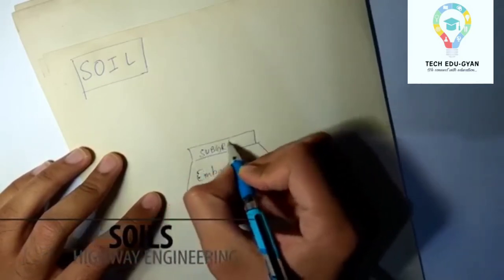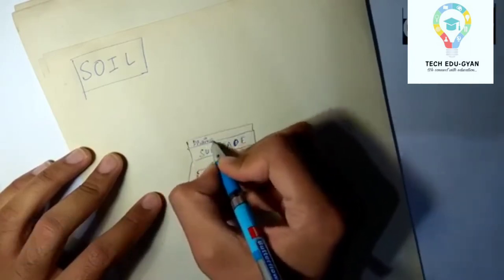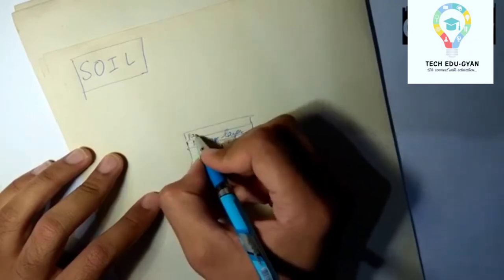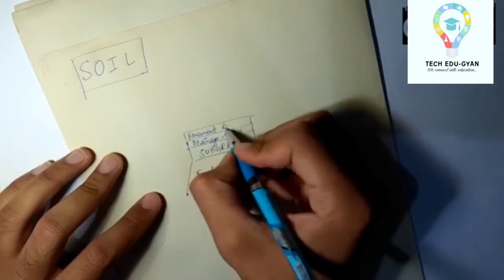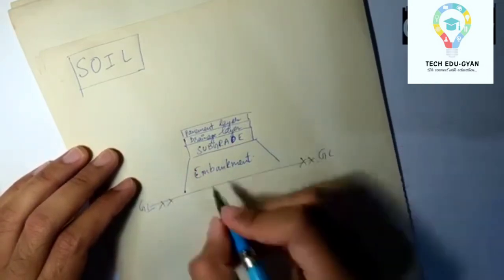We know that a highway is constructed in a number of layers. The lowest layer is our embankment, above it there is a subgrade layer, and above it there is a drainage layer, and the topmost layer is our pavement layer. This is our ground level. The drawing is just for an idea.